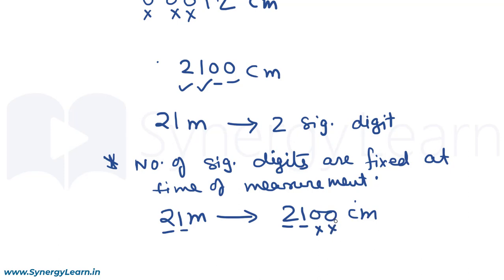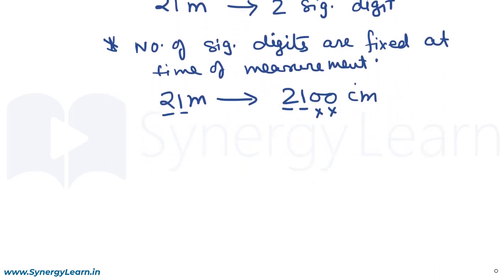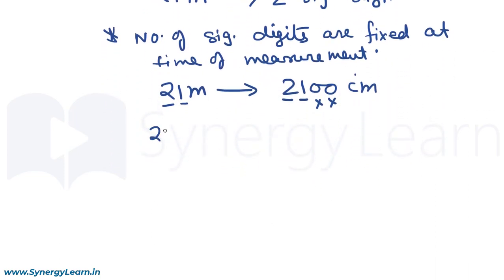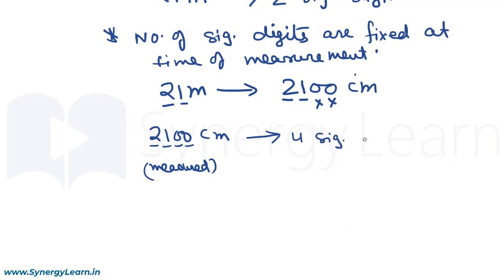The zeros here have come for placing the decimal, so they should not be significant. But consider a situation where somebody has measured a length directly as 2100 centimeters — then the 2, 1, 0, and 0 have all come from measurement, so this should have four significant digits. In such situations we are not sure whether 2100 centimeters has two or four significant digits.